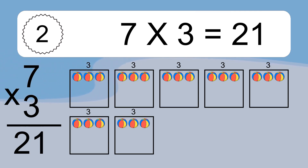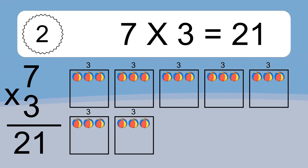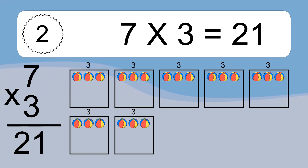We have 7 boxes, and each box has 3 colorful balls inside. If you count all the balls in all the boxes together, you will have 7 times 3 balls. This equals 21 balls.